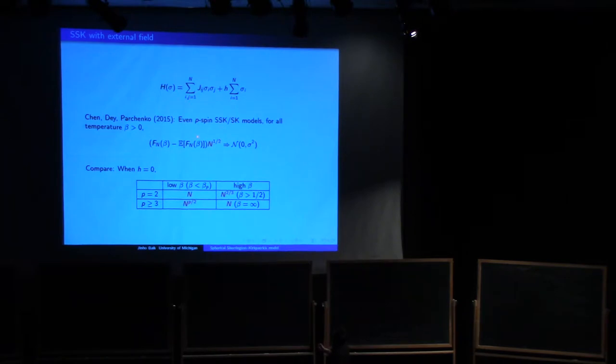So they consider even P spin models, more general, but if you have a general P spin including two spin, and for all temperature, they found the classical central limit scaling. As long as this H is present. If H is positive, any positive number just there, then it changes the thing completely. So this is dramatic change.